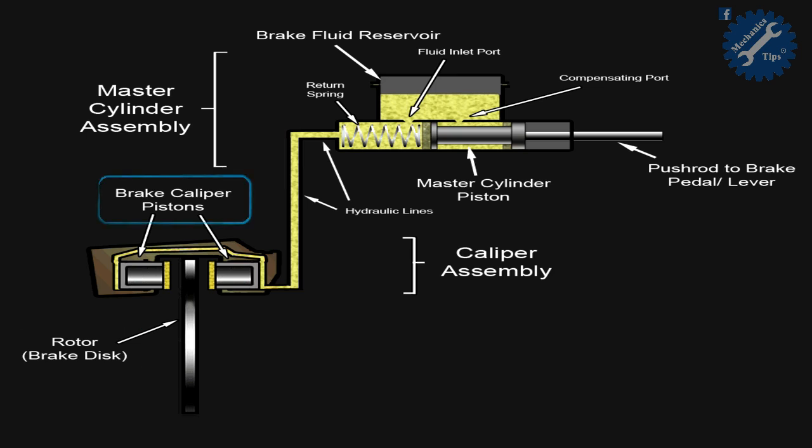The second part is the caliper. The caliper straddles the rotor and houses the disc brake pads and activating pistons. The caliper is usually bolted to the steering knuckle or, in the case of a non-steer axle, to a suspension component.